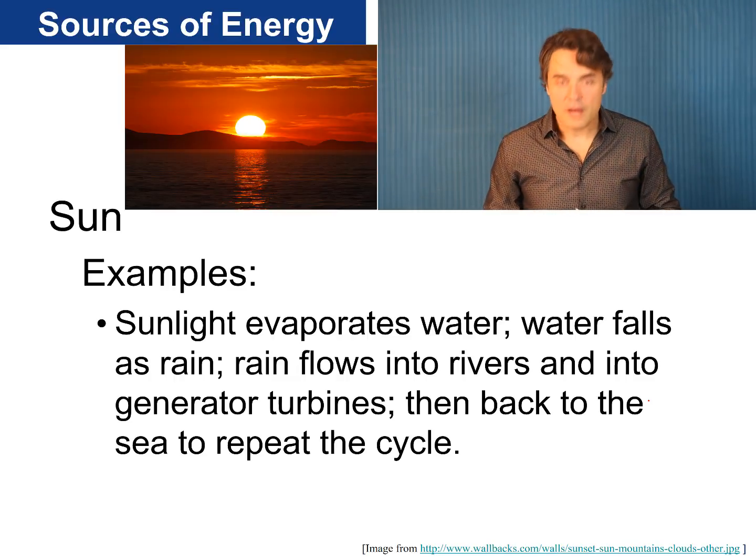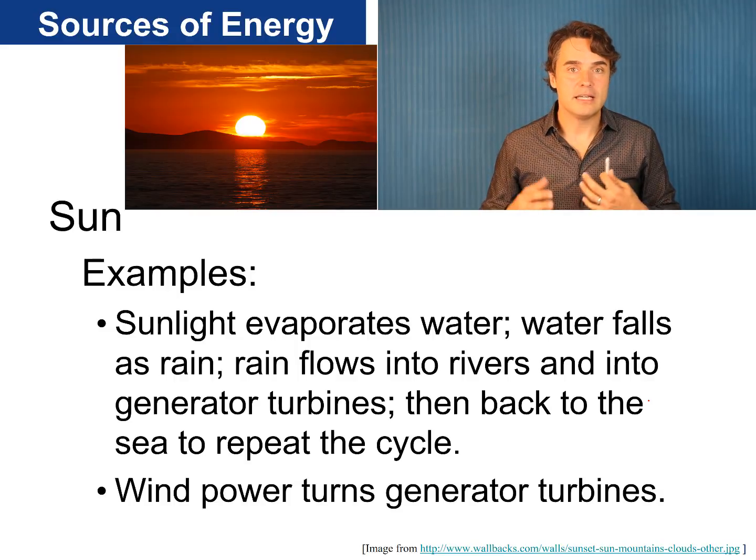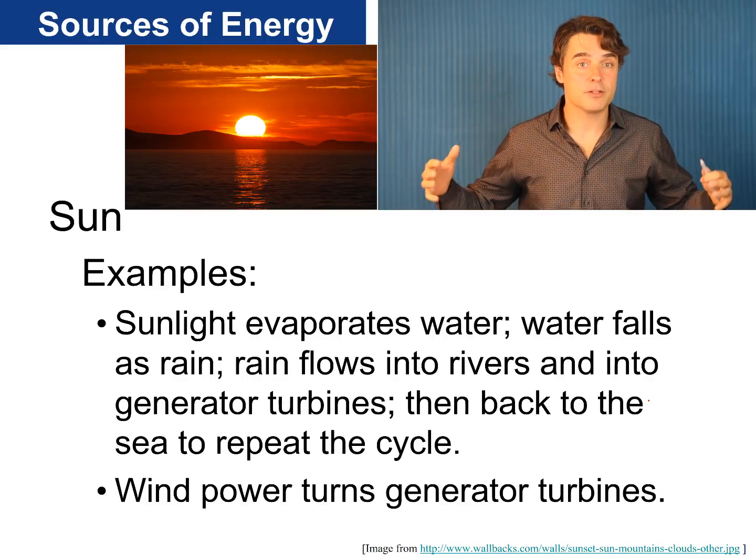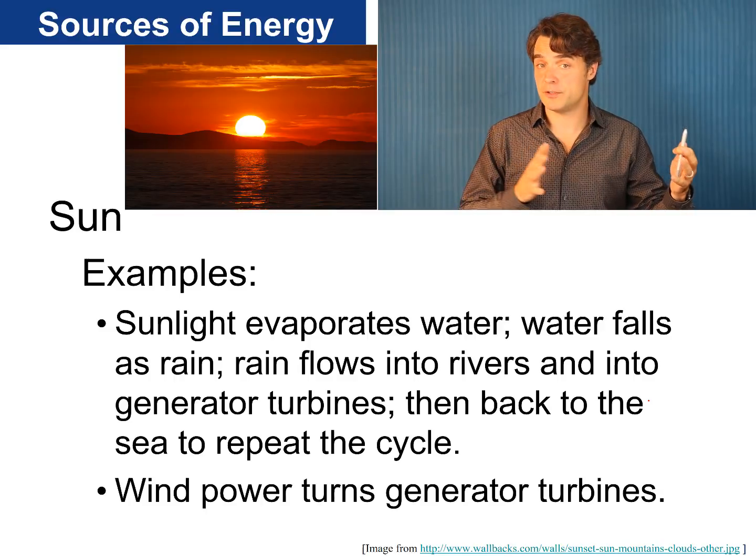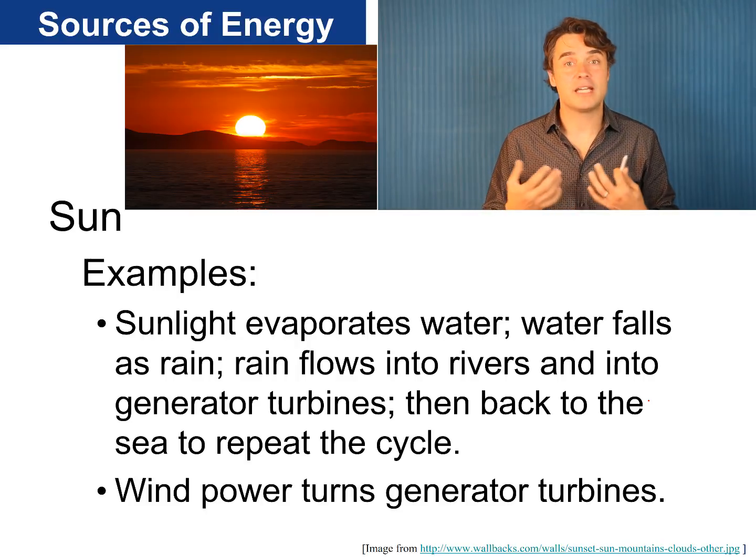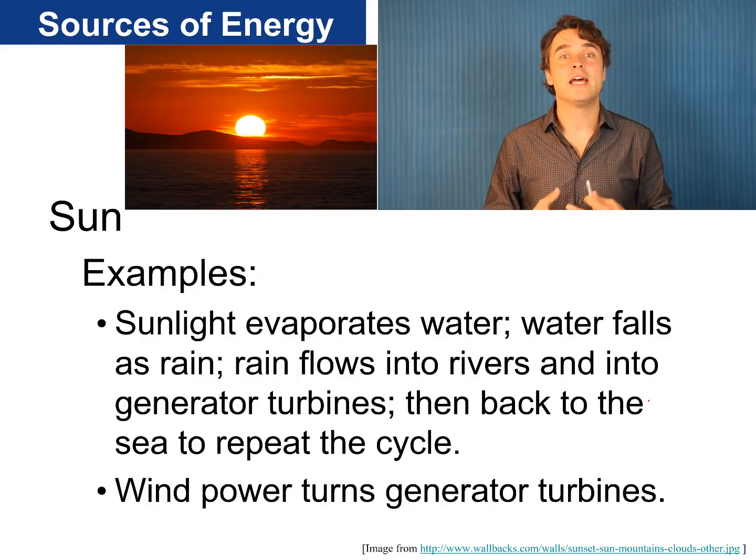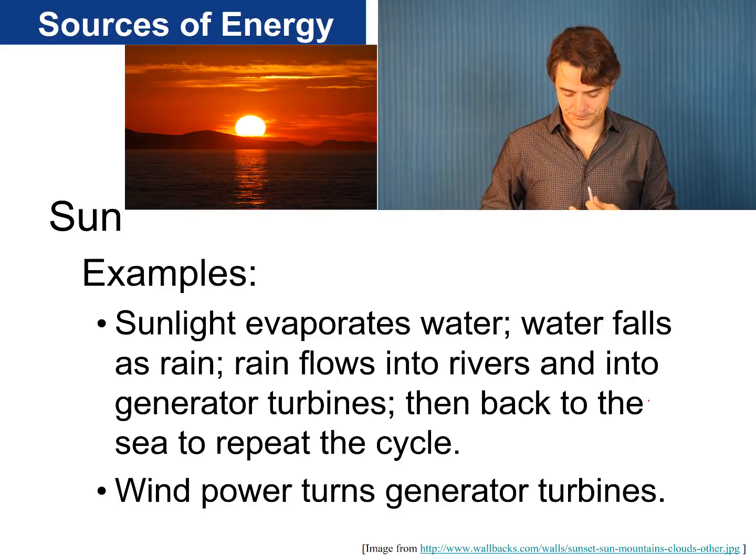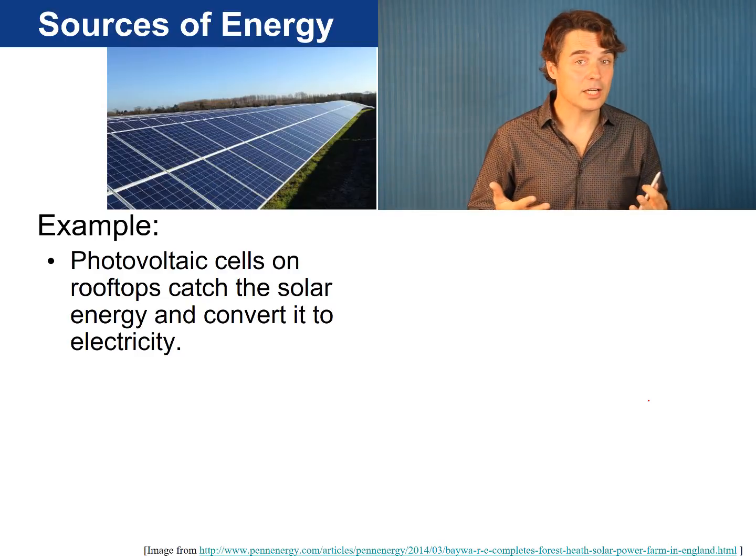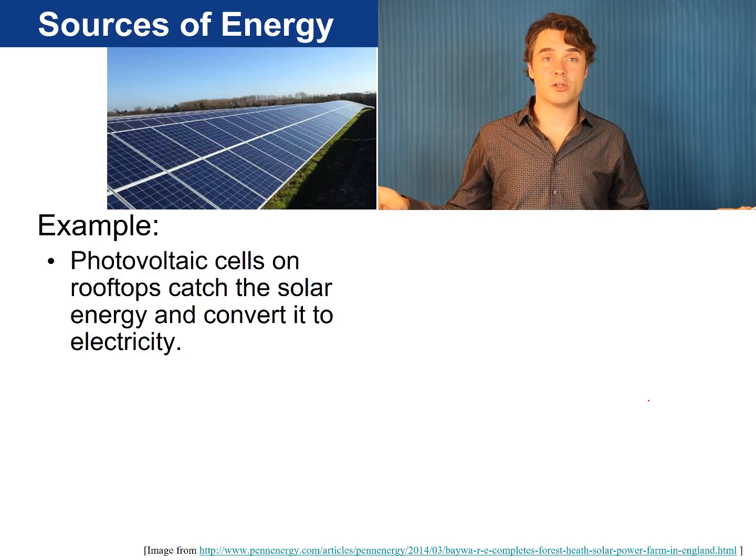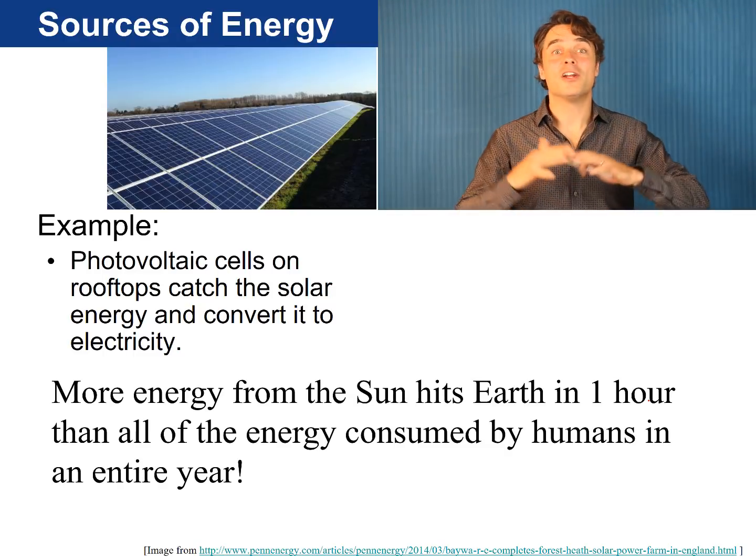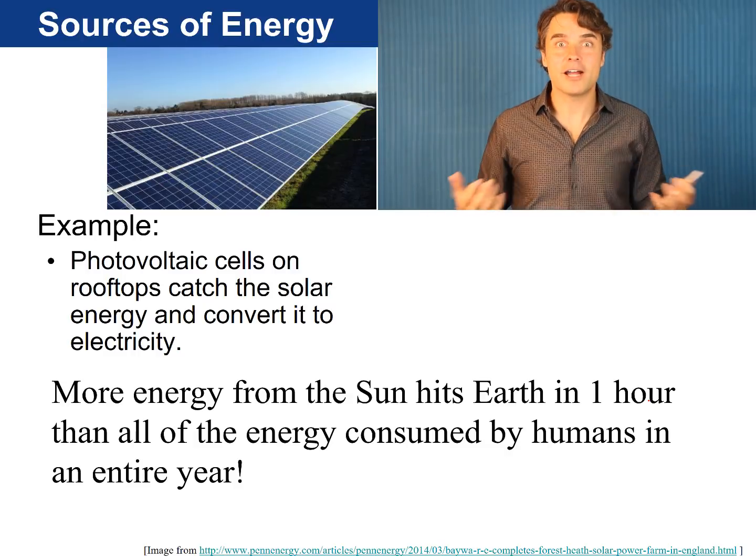And there are other ways that the Sun indirectly supplies us with energy. When ground terrains and water are heated different amounts by sunlight it generates pressure differences in the air which leads to wind and weather. Wind energy can be captured by turbines and converted to electrical energy as well. And sunlight can even be directly converted into electrical energy by solar panels. It turns out that more energy from the Sun hits Earth in one hour than all of the energy consumed by humans in an entire year.